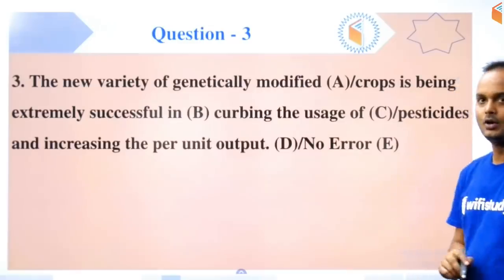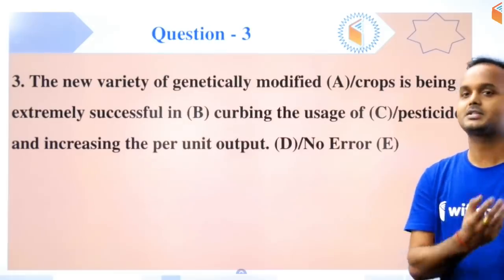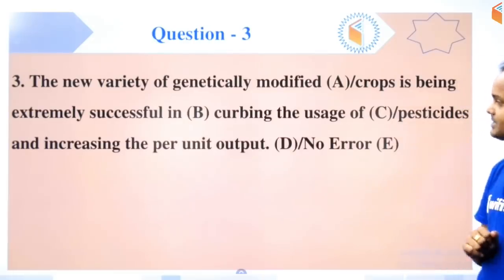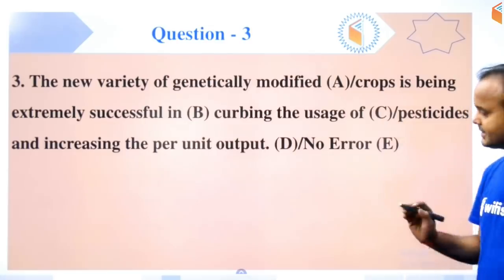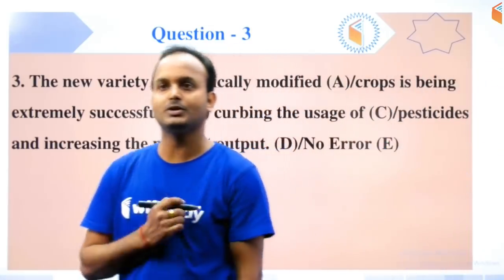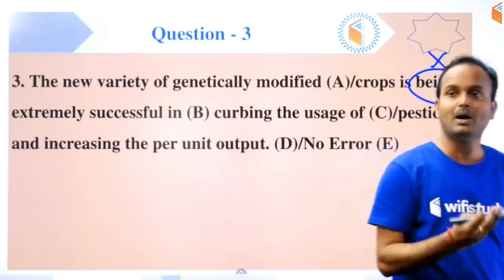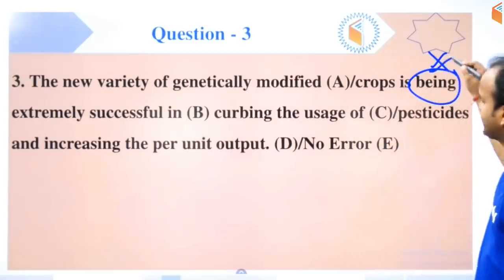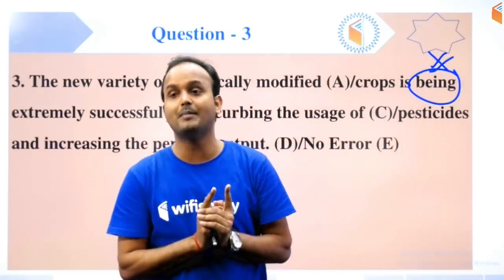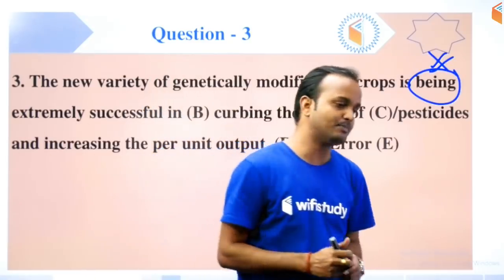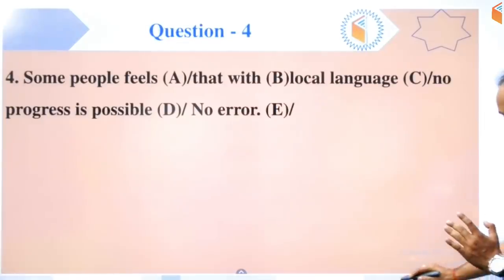Next question on your screen: 'The new variety of genetically modified crops is being extremely successful in curbing the usage of pesticides and increasing the per unit output.' You all know that 'being' comes with passive voice. This sentence is not passive, so we need to remove 'being'. 'Being' comes with sentences that are in passive voice. A sentence is passive when the subject doesn't do the work itself - someone else does it and the subject receives it. See the rules classes to learn more.